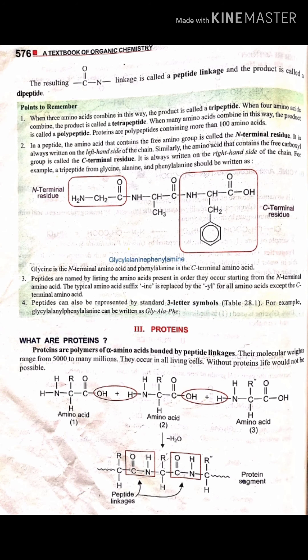Amino acids join together via their COO and amino groups, releasing water or elimination products. The resulting product is attached by a peptide bond. In the case of a dipeptide, we use N-terminal residue on the left side and the amino acid on the right side is called the C-terminal residue.